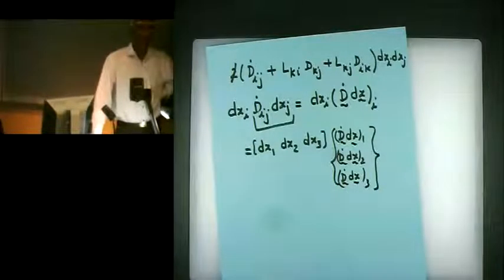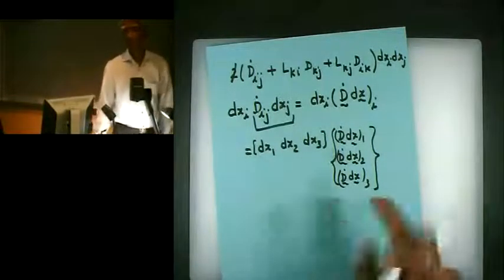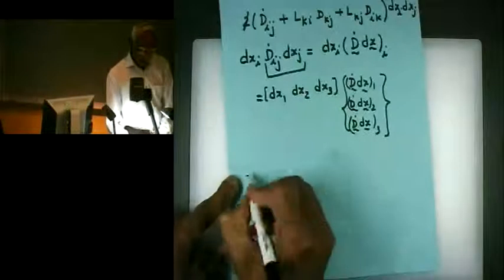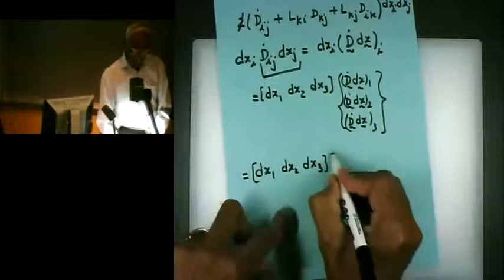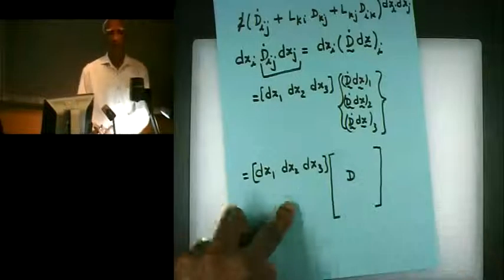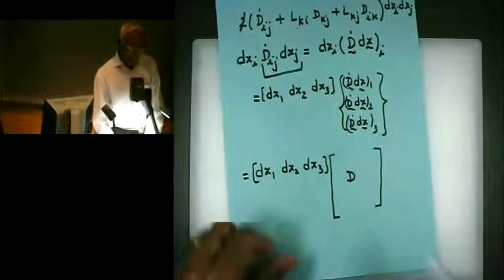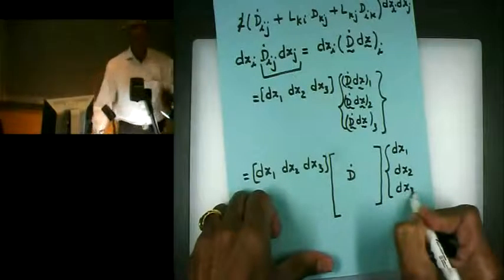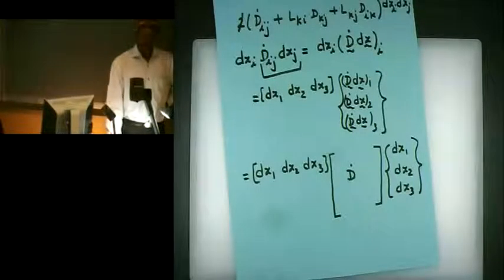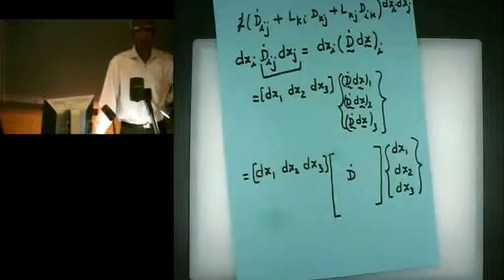If you multiply these, you will get the inner product. Then we can write [dx1, dx2, dx3] and this D matrix — which is like d11, d12, d13, d21, d22, d23, and so on — times [dx1, dx2, dx3]. If you multiply this square matrix by this column matrix, you get a column matrix. So writing D as d11, d12, d13, d21, d22, d23 — does it make sense?